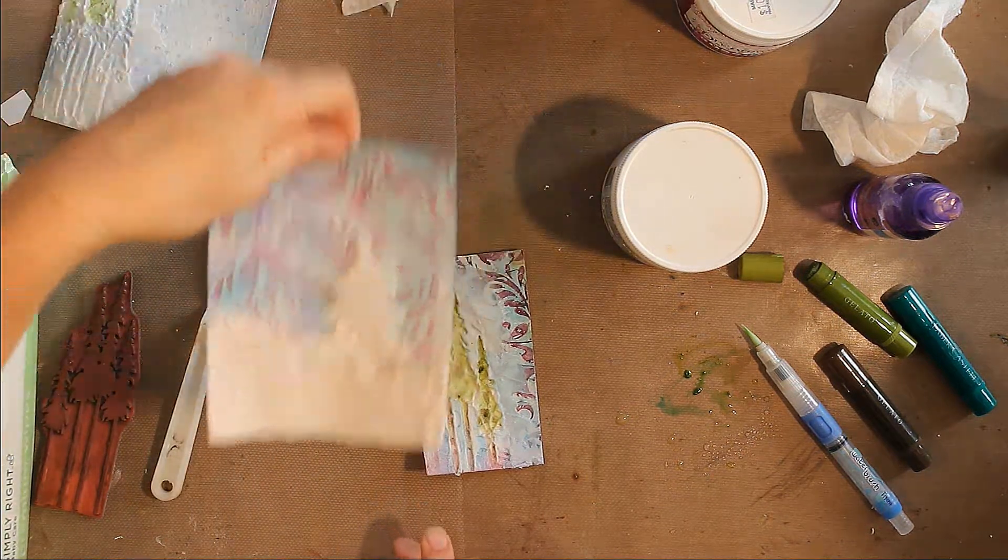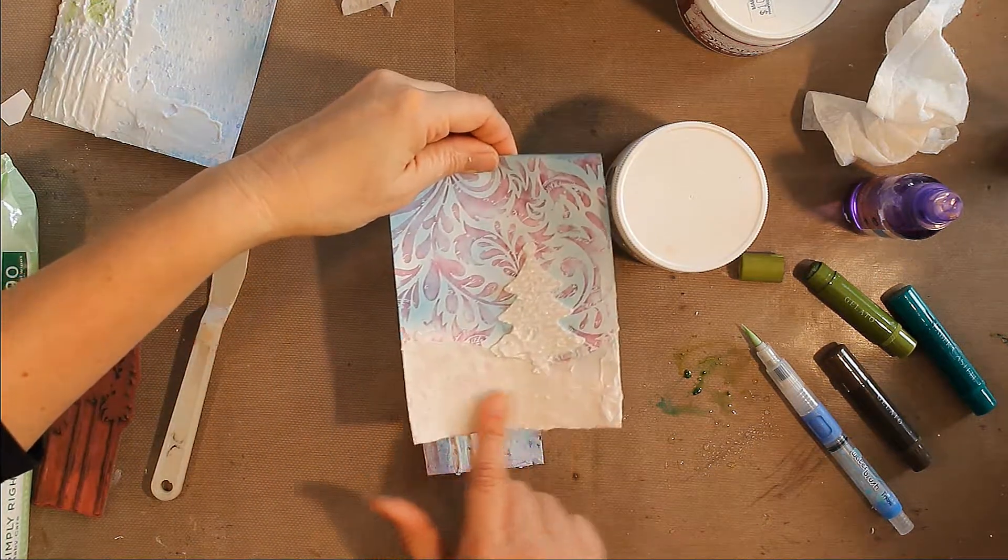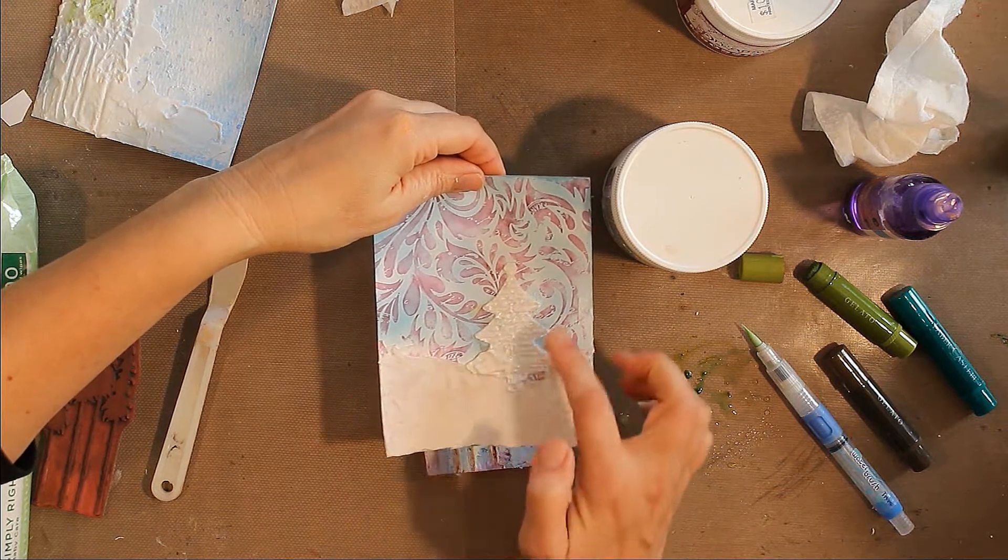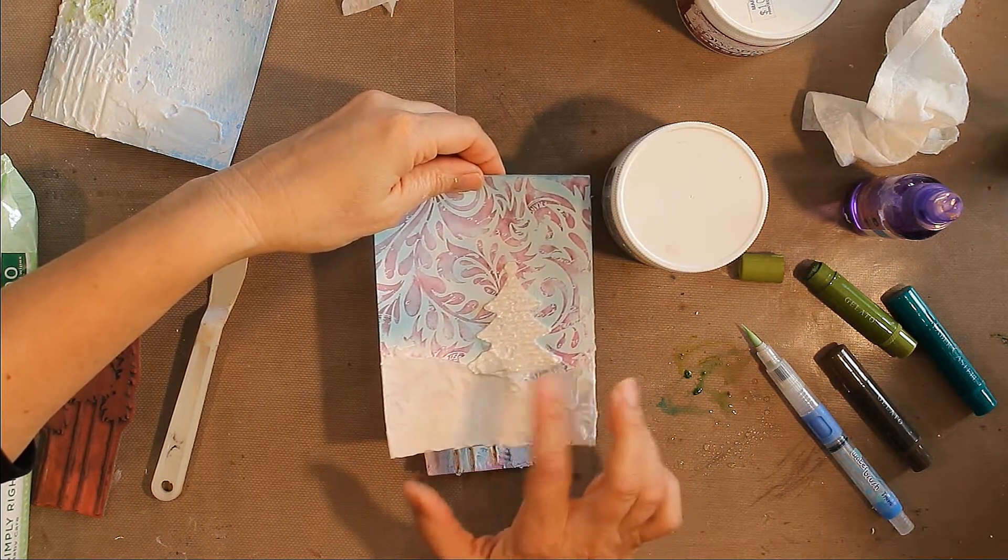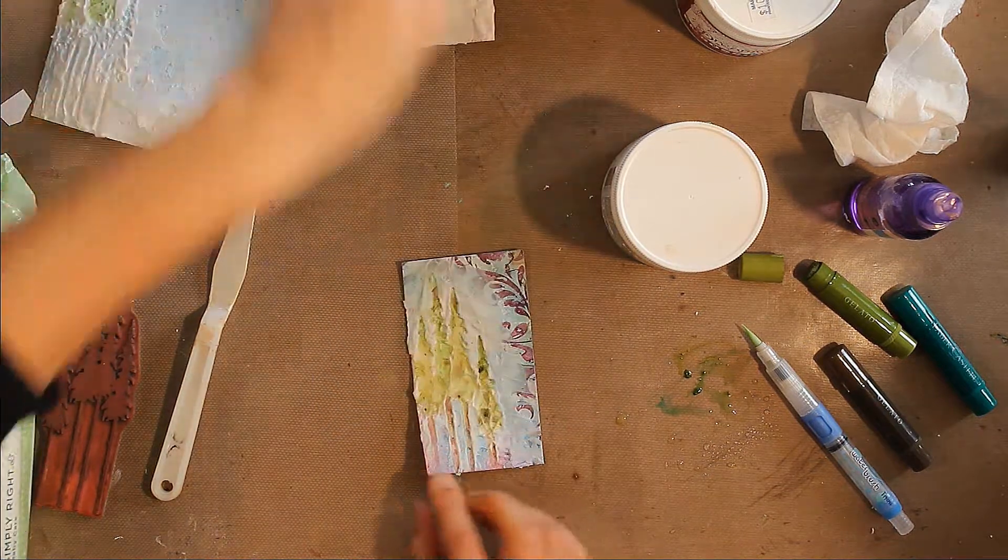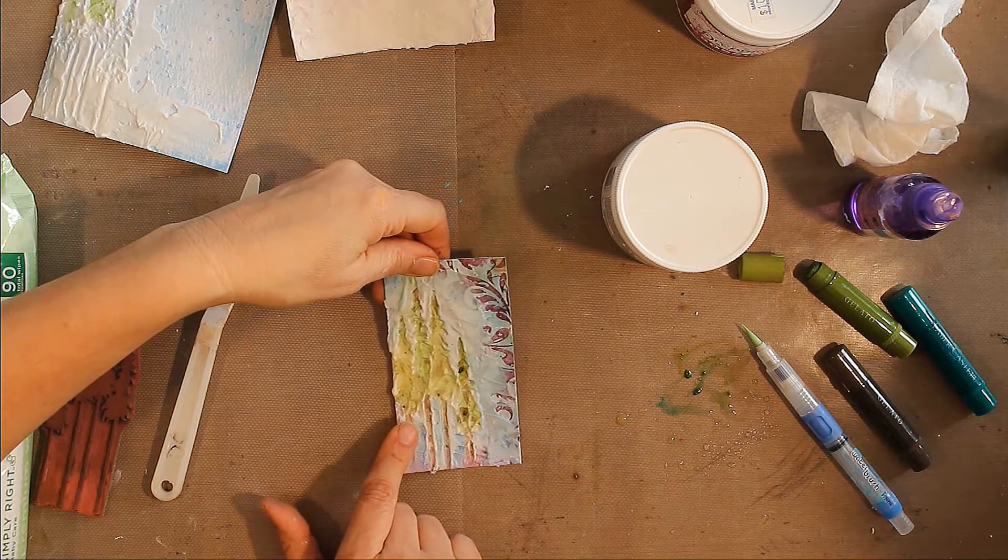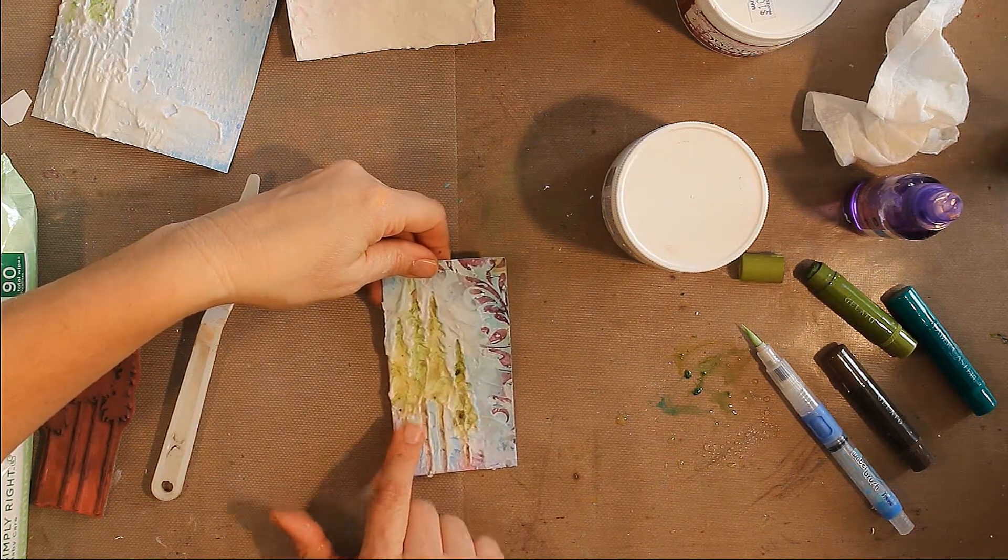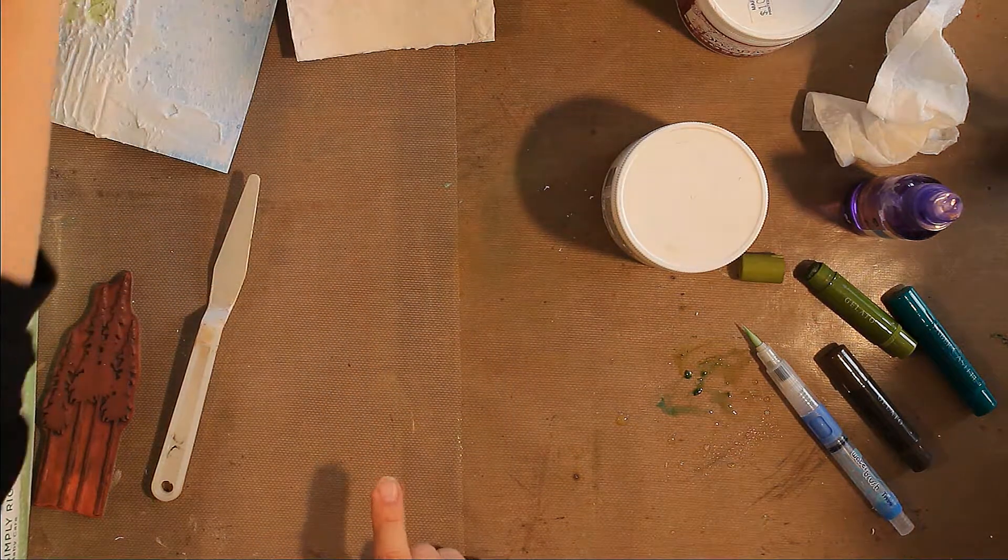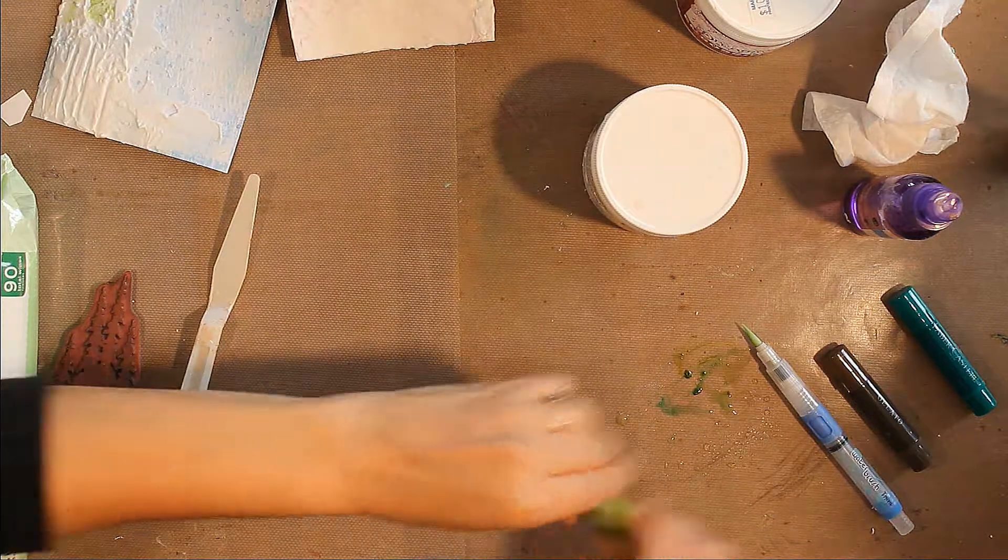So there's a couple different things you can do with embossing paste. You can use them to just create background texture. You can use it to go through your stencil and then stamp over the top of that to create some texture in your pieces. And you can also color on top of your embossing paste with gelatos and various other media, different kinds of inks and paints. Chris has a few other ideas that she's going to show you with embossing paste.